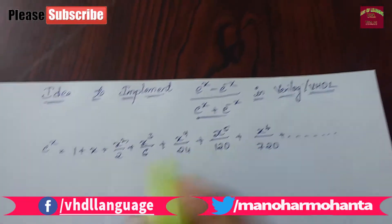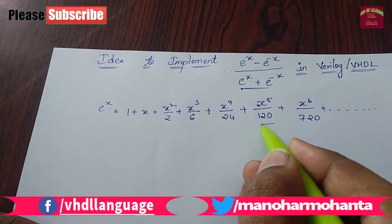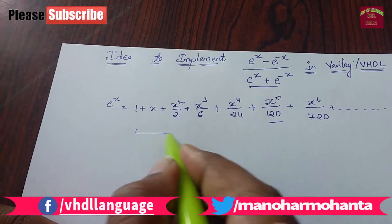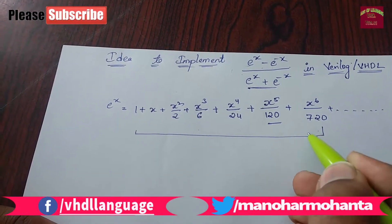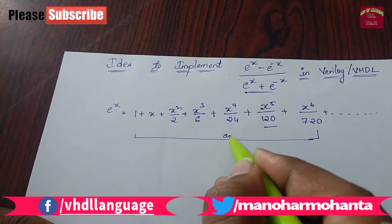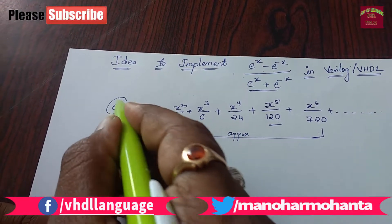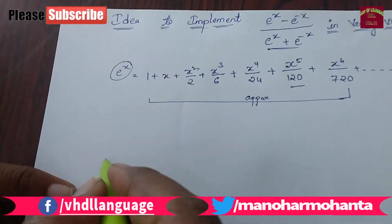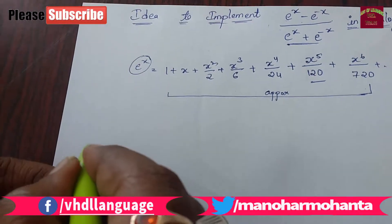So we have approximated last time to 120, but now I have approximated to 6 terms. This is my approximation of e power x. Now what I am going to do is I will first evaluate e power x minus e power minus x.